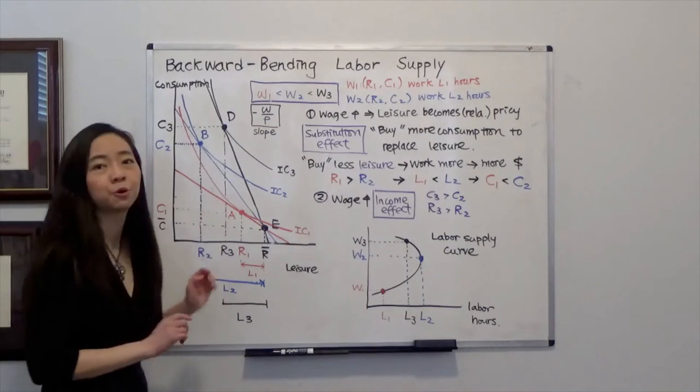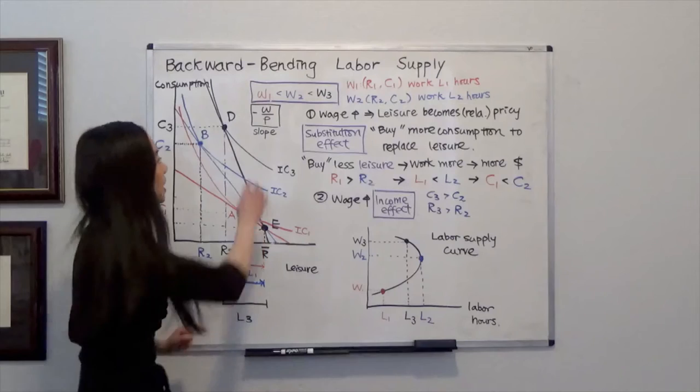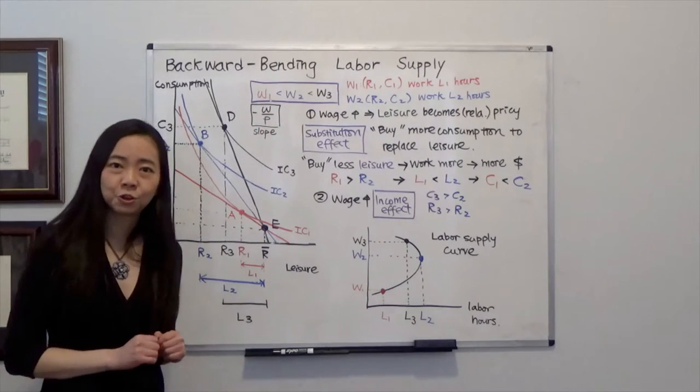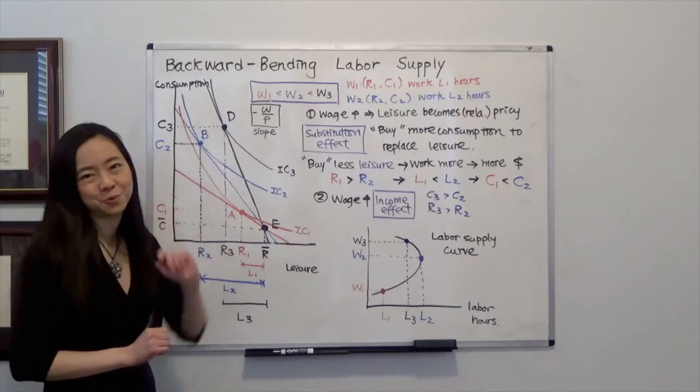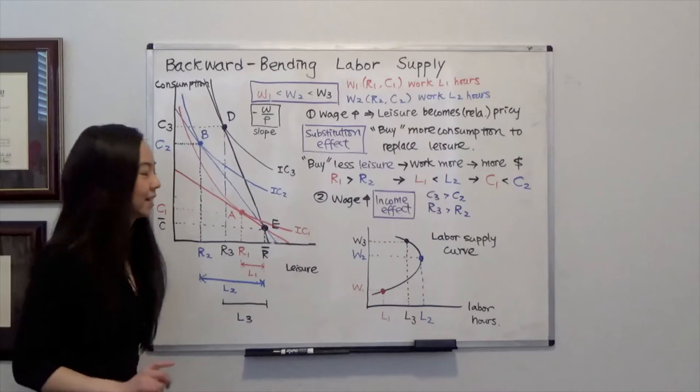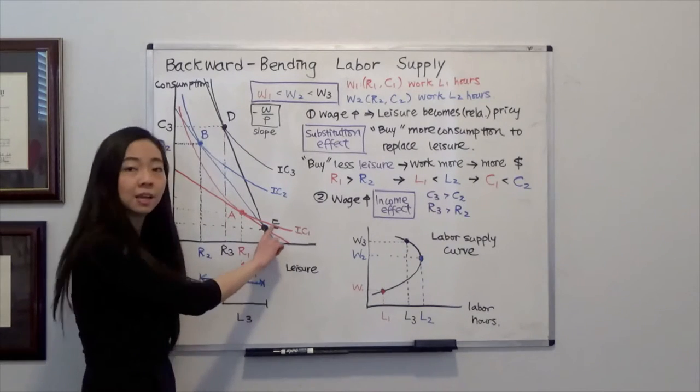And therefore the slope of your budget line is equal to negative W over P. Now, we're going to start with the lowest wage level, W1. So here is your W1.